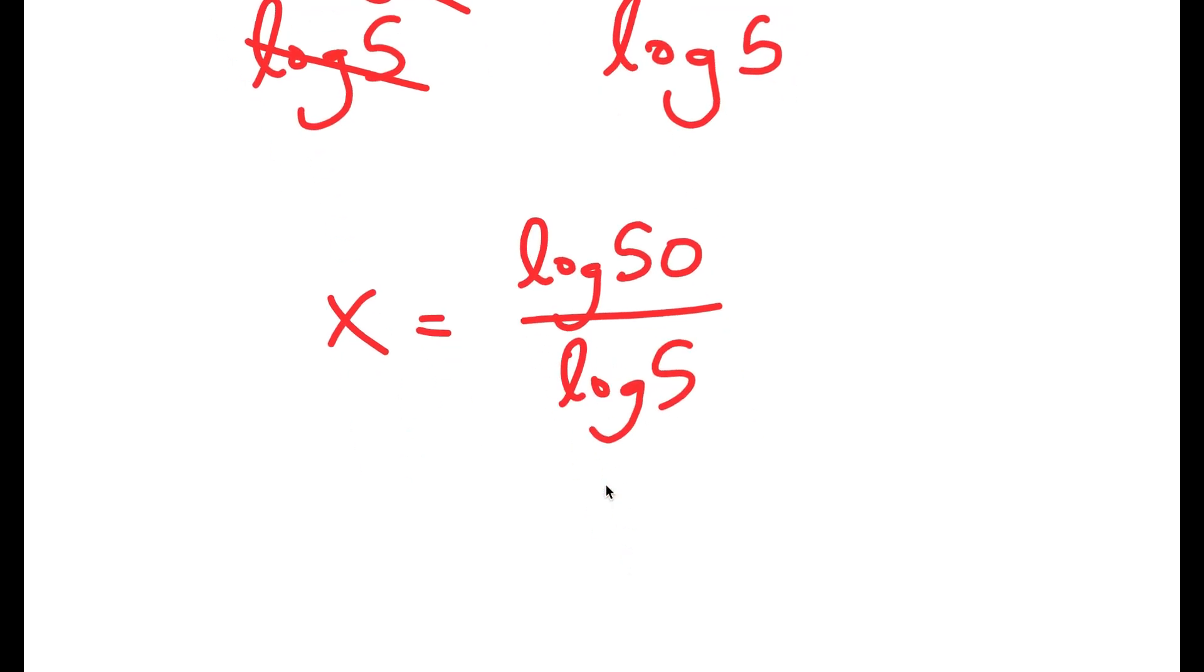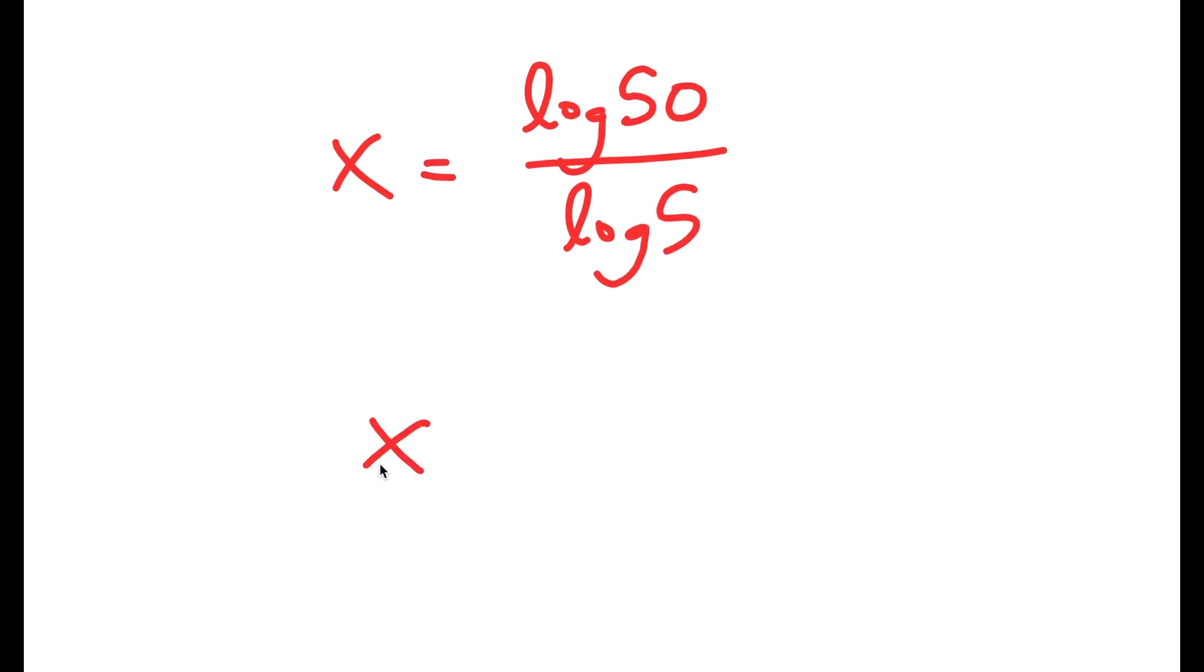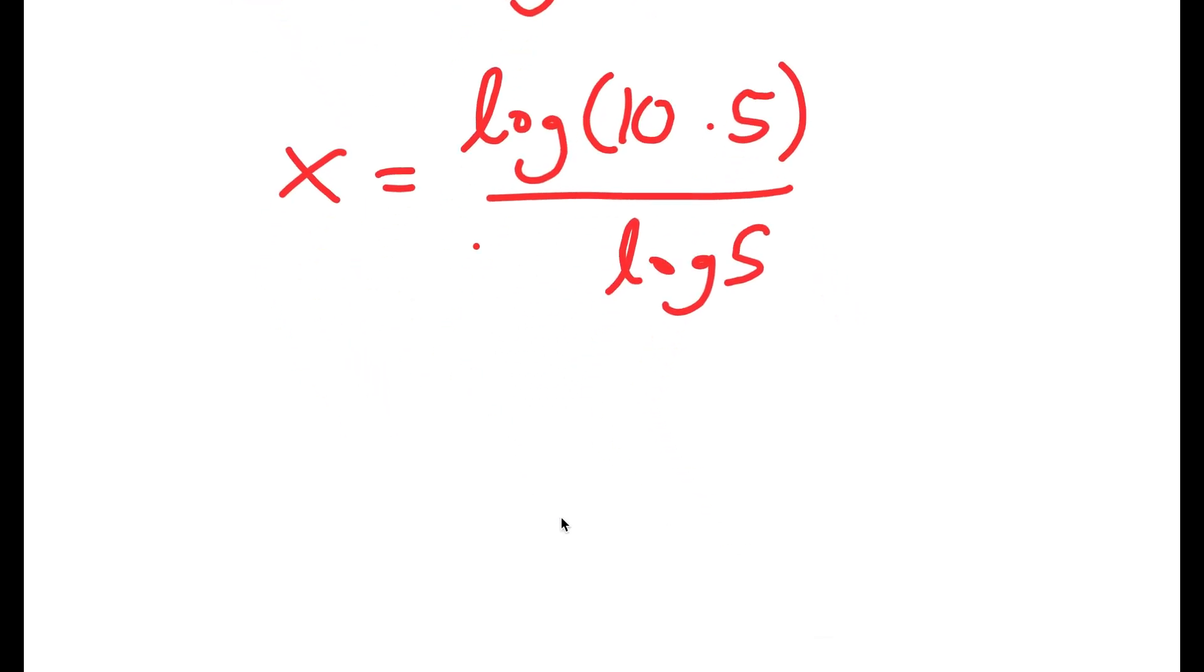And now let's simplify this a little to get the exact decimal value. So log 50 is the same thing as log of 10 times 5. And another property of logarithms is that if I have something in the form log of a times b, this is equal to log a plus log b.